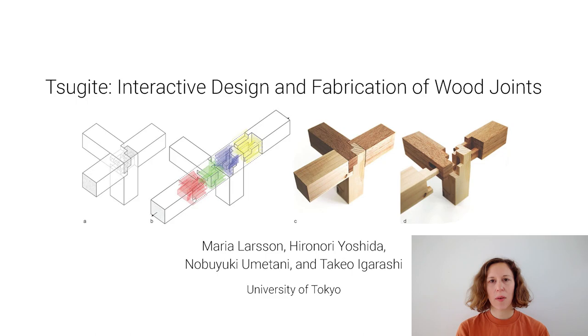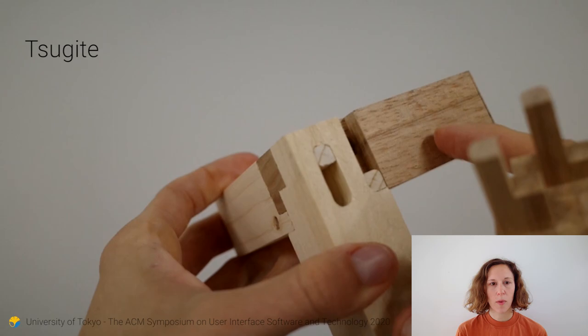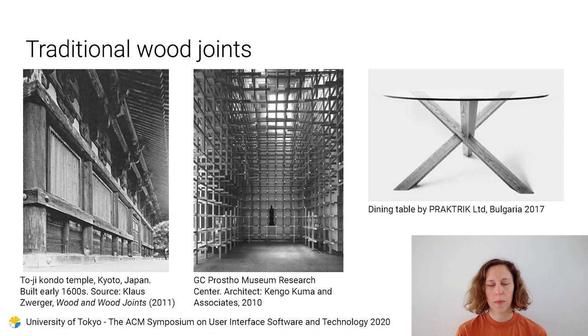Hello, my name is Maria Larsson. I will present our paper Tsugite: Interactive Design and Fabrication of Wood Joints. We propose a system to facilitate the creation of joinery while considering practical criteria, including machine restrictions and material properties. We call it Tsugite, from the Japanese word for joinery.